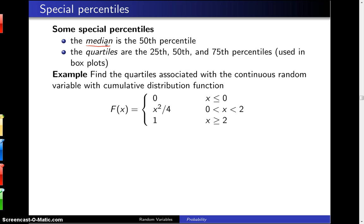The second group of special percentiles are known as quartiles, and those are the 25th, 50th, and 75th percentiles of a distribution. In statistics, these are used in box plots.